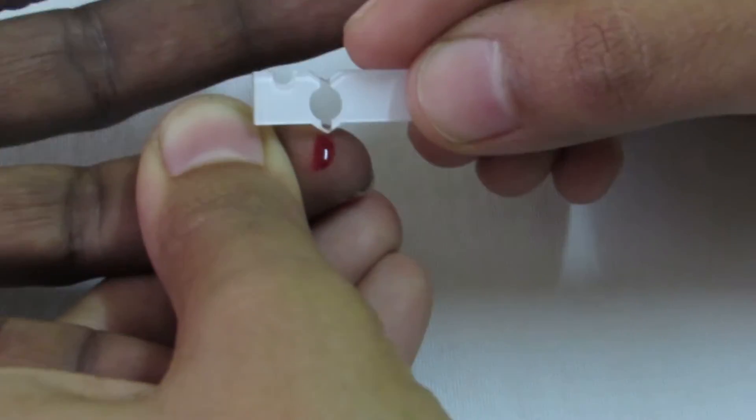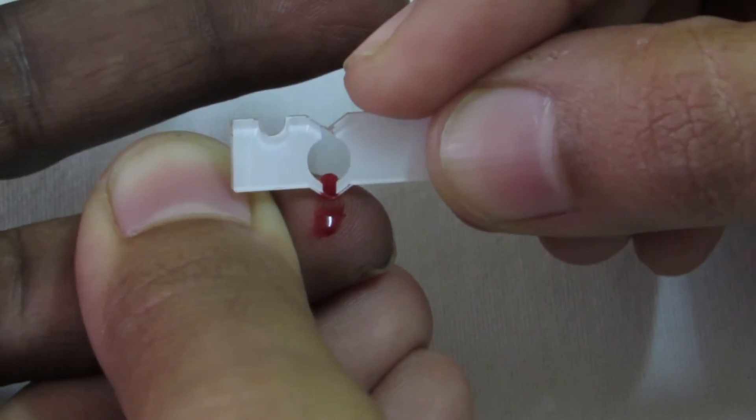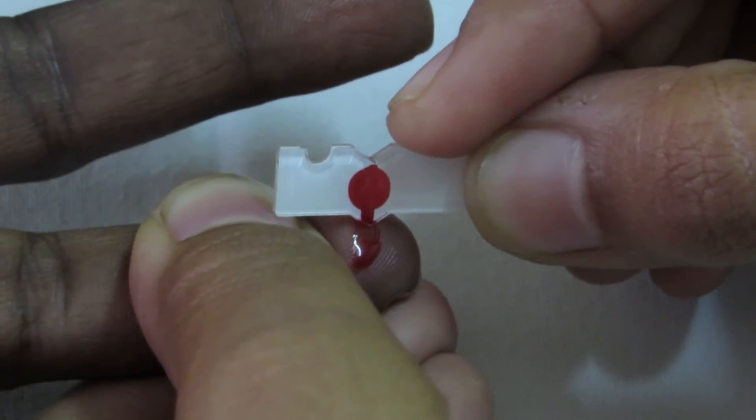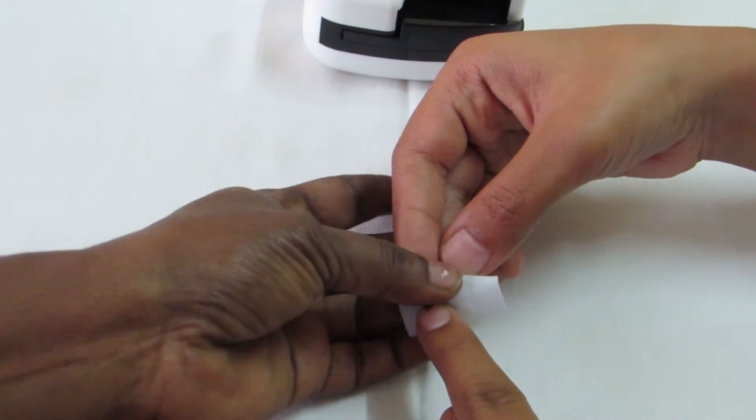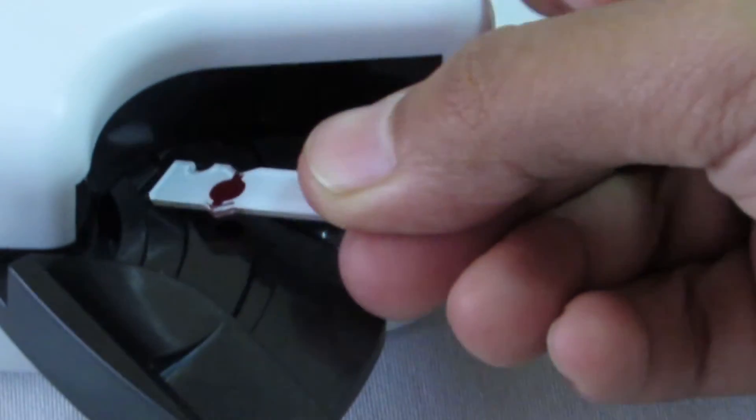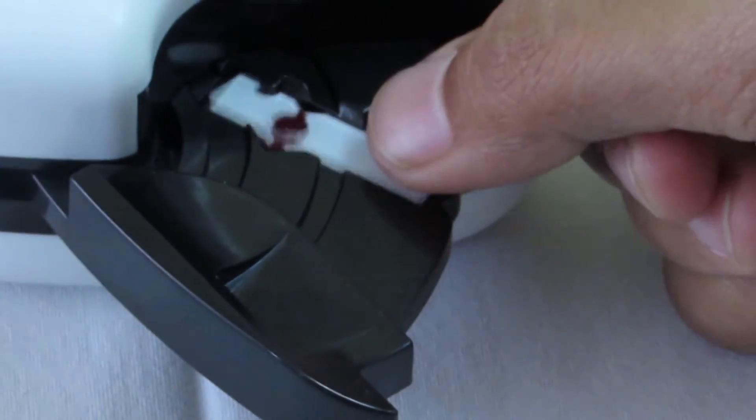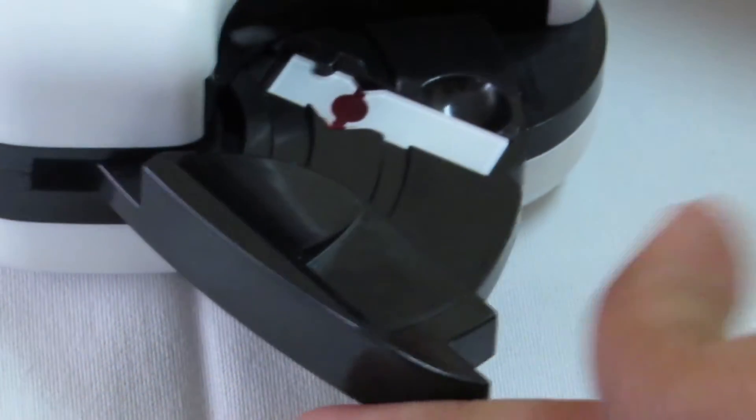Then place the alcohol swab back on the person's finger and put the cuvette in the machine and close it as shown in the video. Now wait for 25 seconds to review your result.